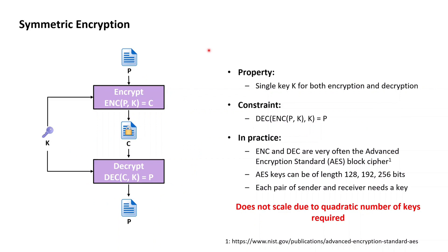The primary cryptographic concept serving this security goal is encryption, and the first major approach to encryption is provided by symmetric encryption. The characteristic property of a symmetric encryption system is that a single key K is used for both the encryption and the decryption operation.